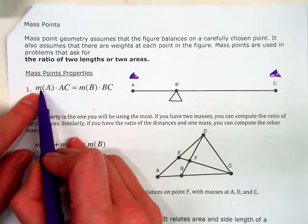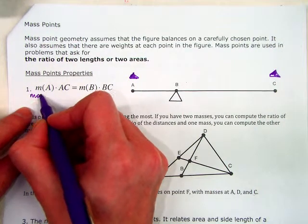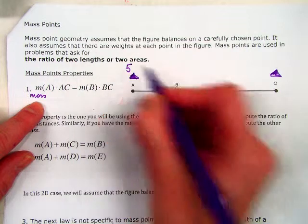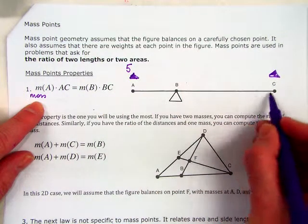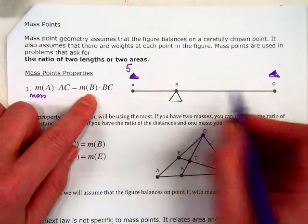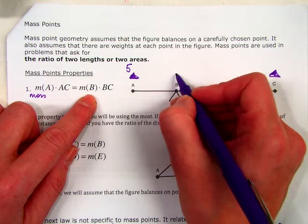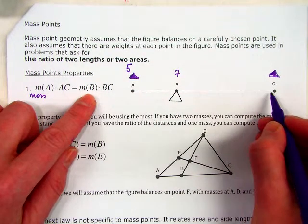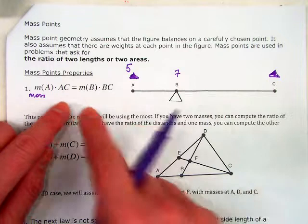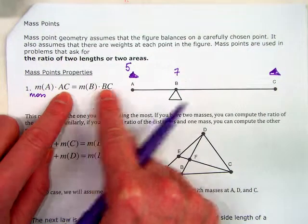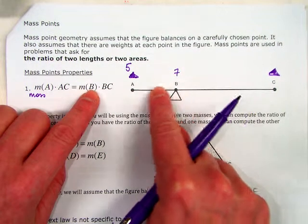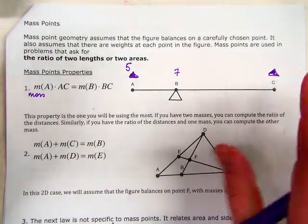M stands for mass. The mass at point A, let's say this would be 5, times this whole thing would be equal to a mass. It would actually tell you, let's say this is 7, the length of BC. As you see problems, you might come back to this: the mass times the length of the whole segment it's attached to, the mass of this point times the length of it. Right now it seems kind of abstract, but let's see.